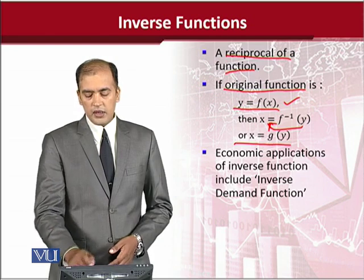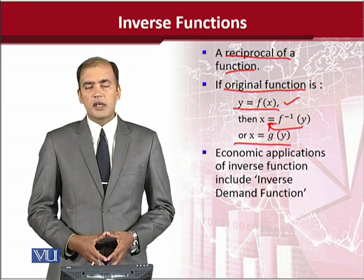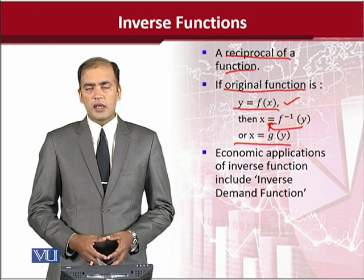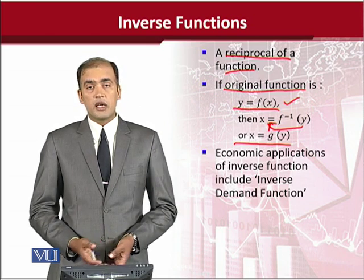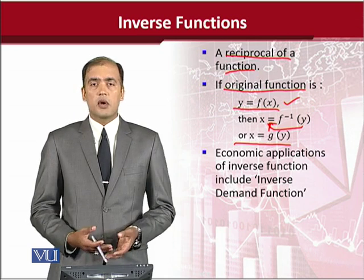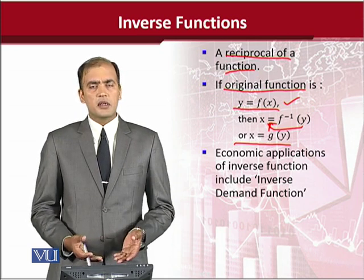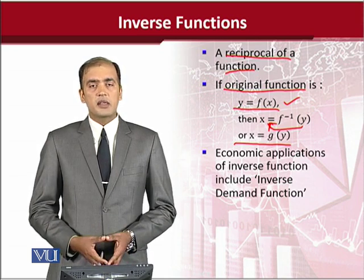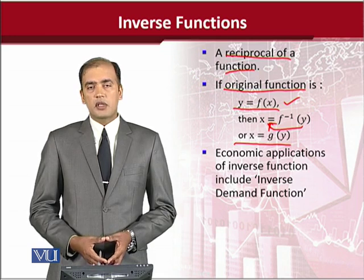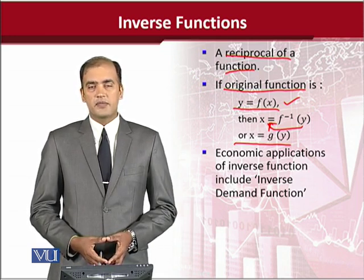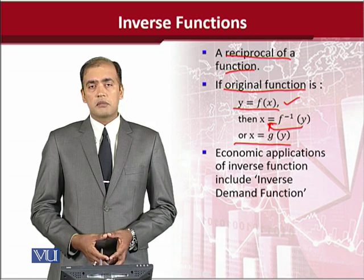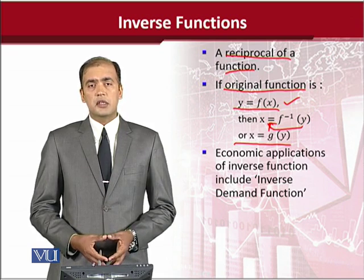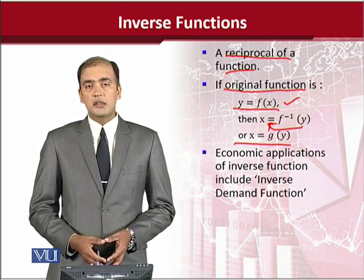Or in a more suitable way, instead of writing f inverse, we can write g of y. Because we know that a function is usually represented with small f, capital F, small g, capital G, small h, capital H, and there are other Greek letters as well — psi and phi. These are all options that are available. We should change it because now, if we plot the function, it will not look like the same function. If it was a positively sloped function with a certain slope, the result can be altogether different, and we can expect a different slope. So it is not the same function.